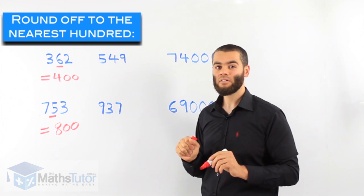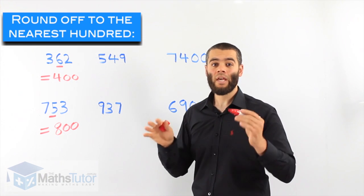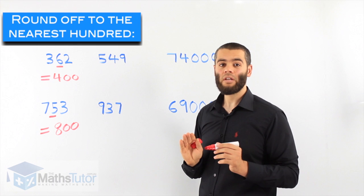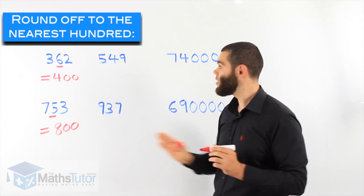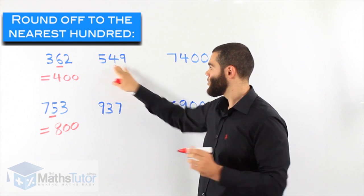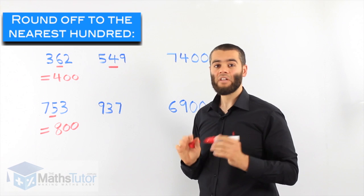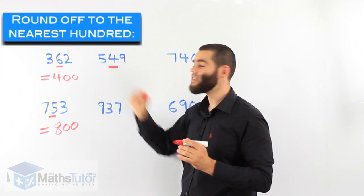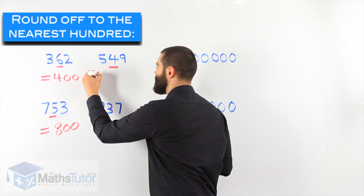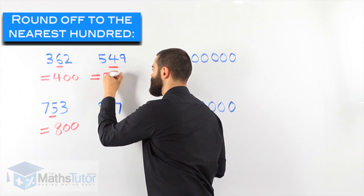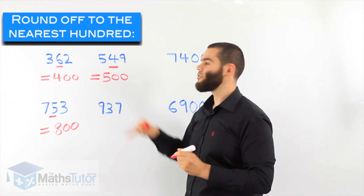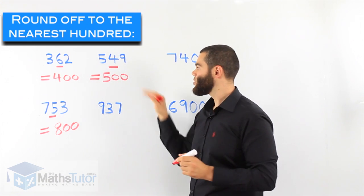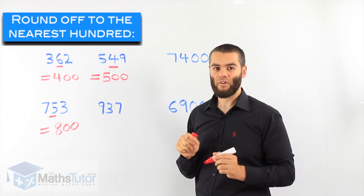Another example: five hundred and forty-nine. We're going to round it off to the nearest hundred. We look at the number on the right of the hundreds column — that number is a four. We notice this four is less than five. It doesn't have muscles to push us up, so we round down. It becomes five hundred instead of five hundred and forty-nine. It doesn't have enough muscles, so we round down. The answer to the nearest hundred is five hundred.